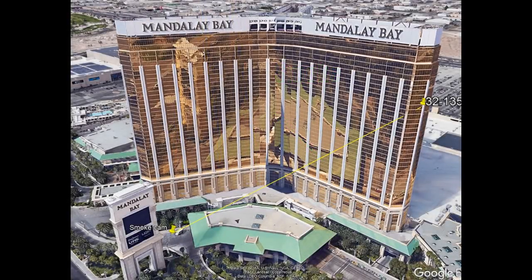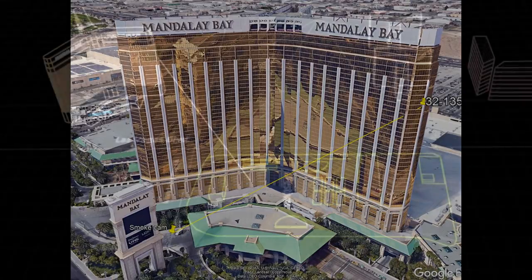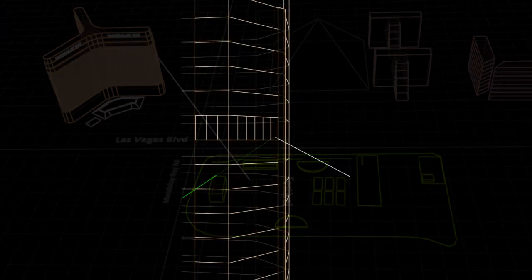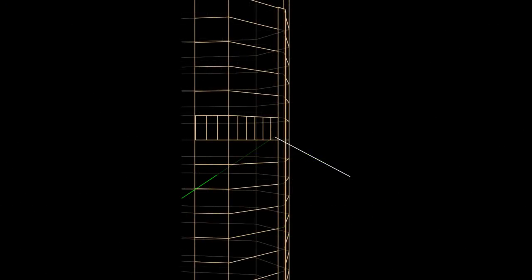Here's a 3D demonstration. This is a bird's eye view of the bullet path from 32135 to the most targeted area of the festival. This is a close-up of the 32135 window with the same bullet path. We'll now replace the bullet path with a big red flag to better see it, while keeping the line direction exactly as it is.